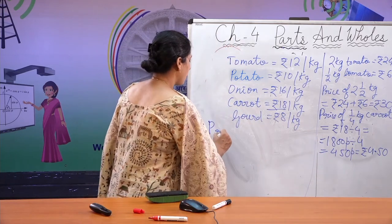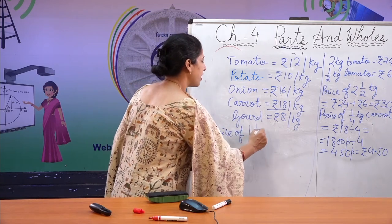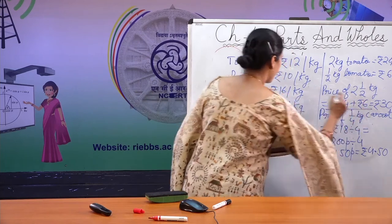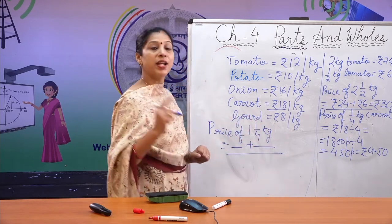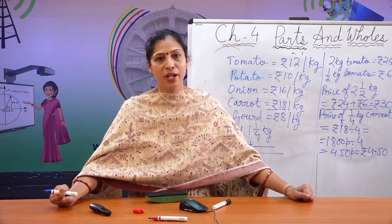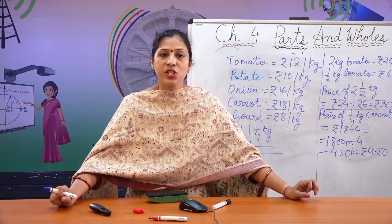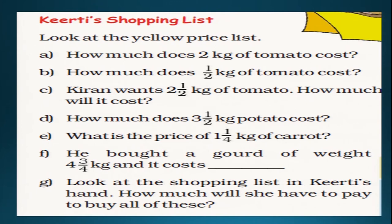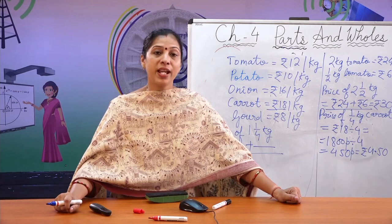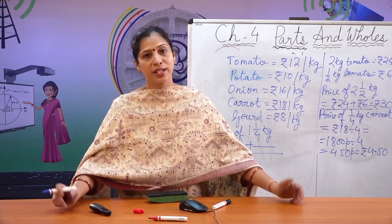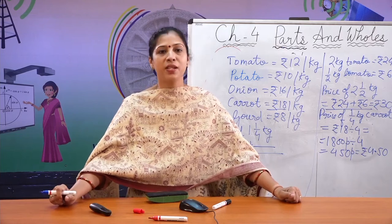So the price of 1 and 1/4 kg of carrot will be the price of 1 kg plus the price of 1/4 kg. Similarly, if someone bought gourd of weight 4 and 3/4 kg, first find out the price of 3/4 kg, then find the price of 4 kg, and add them to get the price of 4¾ kg.